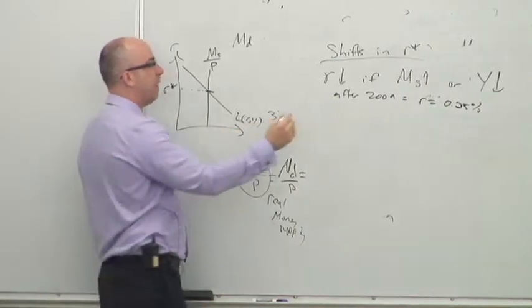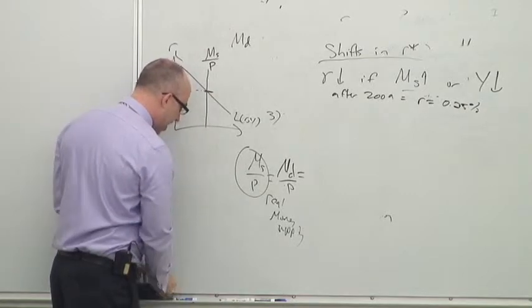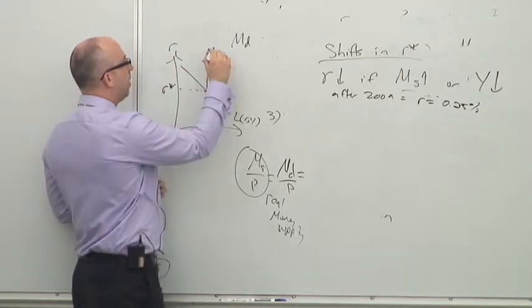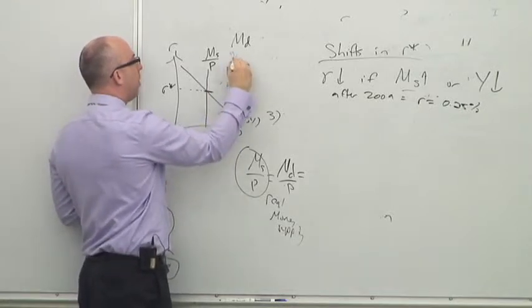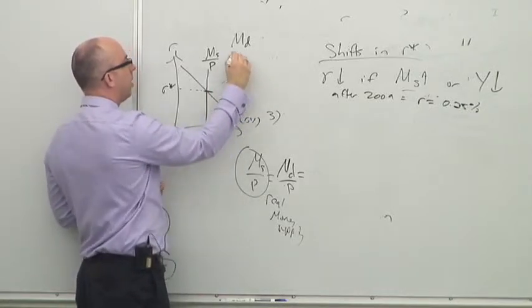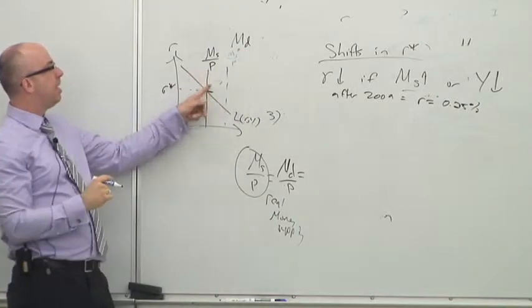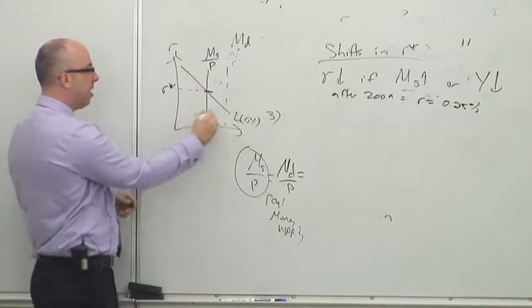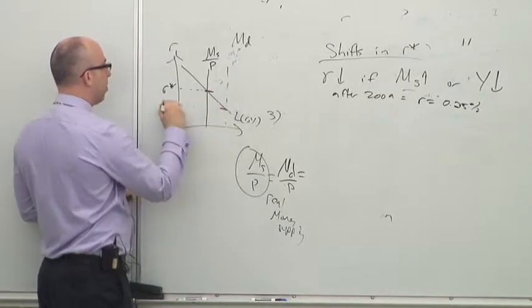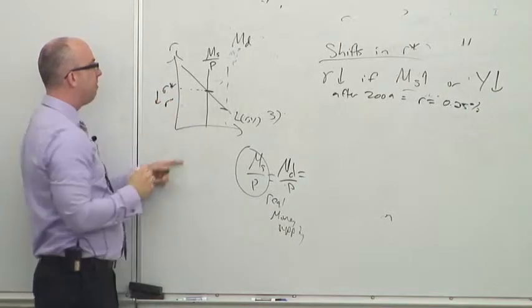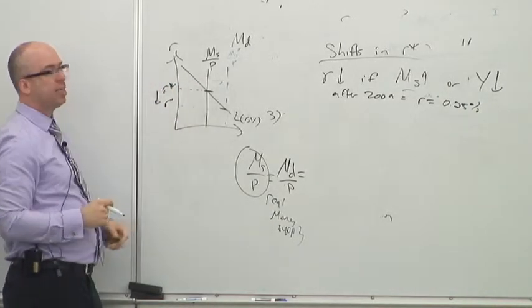So I'll start with this one. If the Fed increases the money supply from here to here, the equilibrium interest rate drops. So R goes down if the money supply goes up.